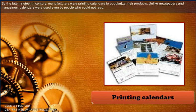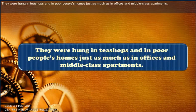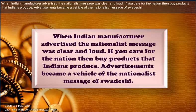By the late 19th century, manufacturers were printing calendars to popularize their products. Unlike newspapers and magazines, calendars were used even by people who could not read. They were hung in tea shops and in poor people's homes, just as much as in offices and middle-class apartments. When Indian manufacturers advertised, the nationalist message was clear and loud: if you care for the nation, then buy products that Indians produce. Advertisements became a vehicle for the nationalist message of Swadeshi.